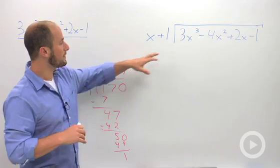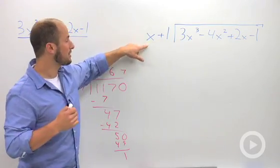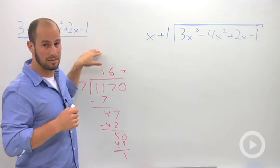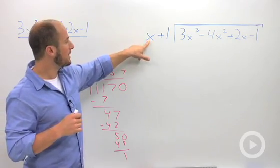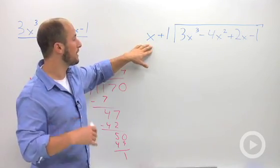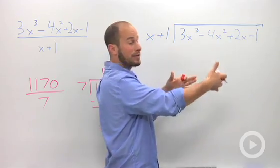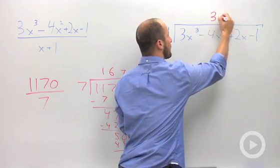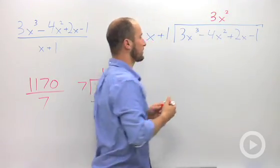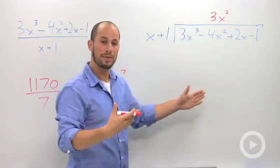The first thing you want to get rid of is the 3x cubed. And we look at our leading term on our divisor, the term in the bottom. In order to get 3x cubed from x, we need to multiply it by 3x squared. So I always try to line up my powers. So I'm going to put 3x squared right there, so I have all my squares in a column right here.